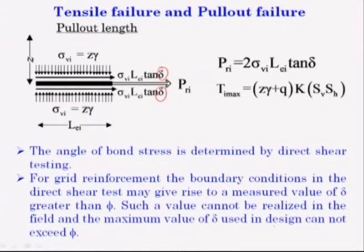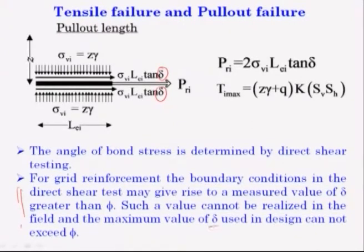For grid reinforcement, the boundary conditions in the direct shear test may give rise to a measured value of delta greater than phi. Such a value cannot be realized in the field, and the maximum value of delta used in design cannot exceed phi. The condition is that the frictional angle between soil and reinforcing material — delta — should not exceed phi, the inter-frictional angle of the soil.